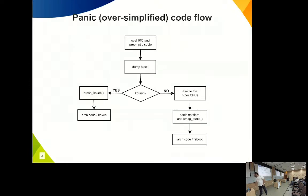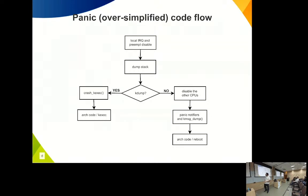Here's an oversimplified code flow of the panic. The panic process disables IRQs and preemption (thread scheduling), then dumps the stack. If kdump is configured, it goes to the crash kexec path. If not, it disables other CPUs, runs panic notifiers and kmsg_dump, and eventually reboots the machine if that's configured — using arch-specific reboot code.